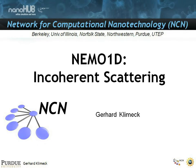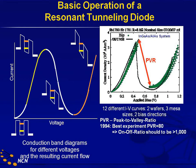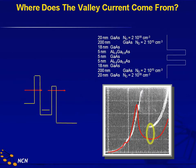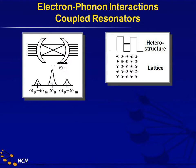So now let's look at the incoherent scattering treatment in NEMO 1D. Here is the prototypical motivation of the device and why we want to understand the valley current. Here is where we left off at the previous presentation. We are close to experiment in terms of the peak current and getting the details of the turn-on right, but we are not doing well on the valley current. The general assumption still in 1994-96 was that it must be scattering. So let's look at what scattering there could be.